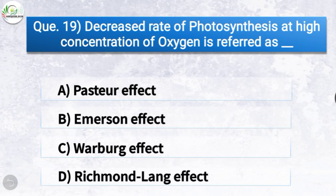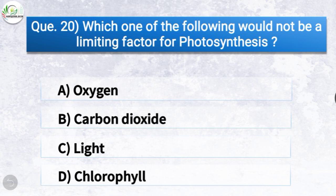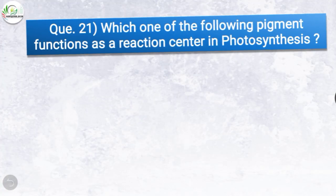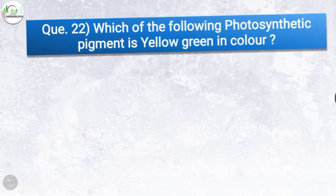Question 19: Decreased rate of photosynthesis at high concentration of oxygen is referred to as what? Options: Pasteur effect, Emerson effect, Warburg effect, or Richmond-Lang effect. The correct answer is option C — Warburg effect. Question 20: Which of the following would not be a limiting factor for photosynthesis? The correct answer is option A — oxygen. Question 21: Which pigment functions as a reaction center in photosynthesis? The correct answer is option A — chlorophyll a.